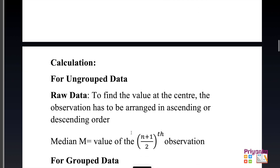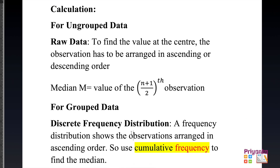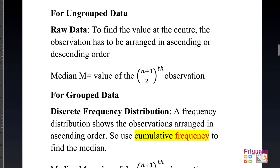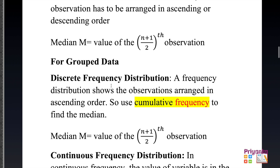Starting the explanation of median: the formula changes based on the given information. For ungrouped raw data, observations must first be arranged in ascending or descending order. The formula to find the median is: value of the (n+1)/2 th observation. For discrete frequency distribution, you first find cumulative frequency from the given frequency, then use the same (n+1)/2 formula.